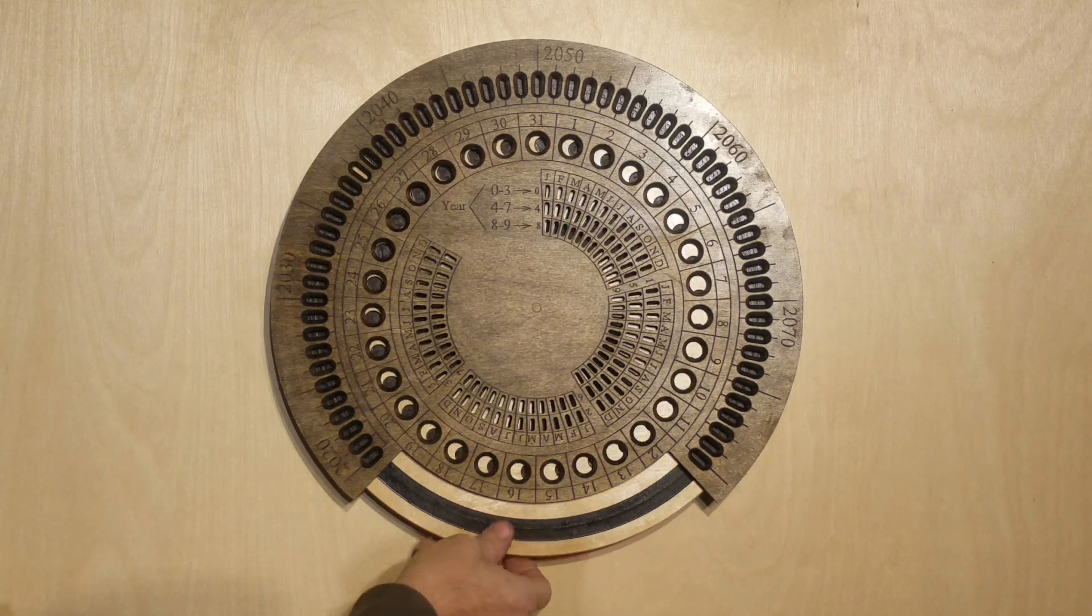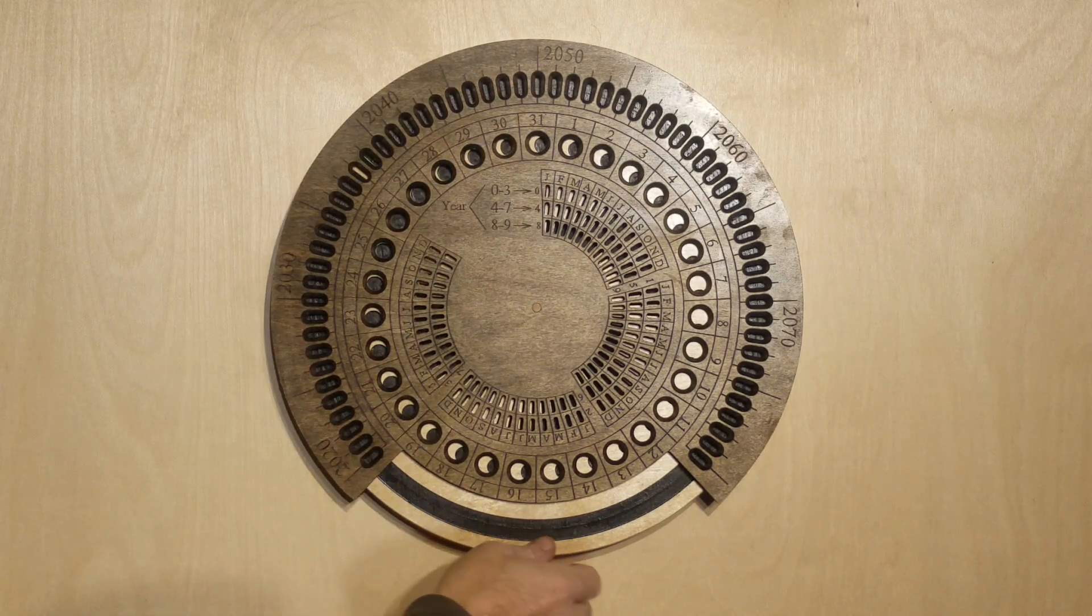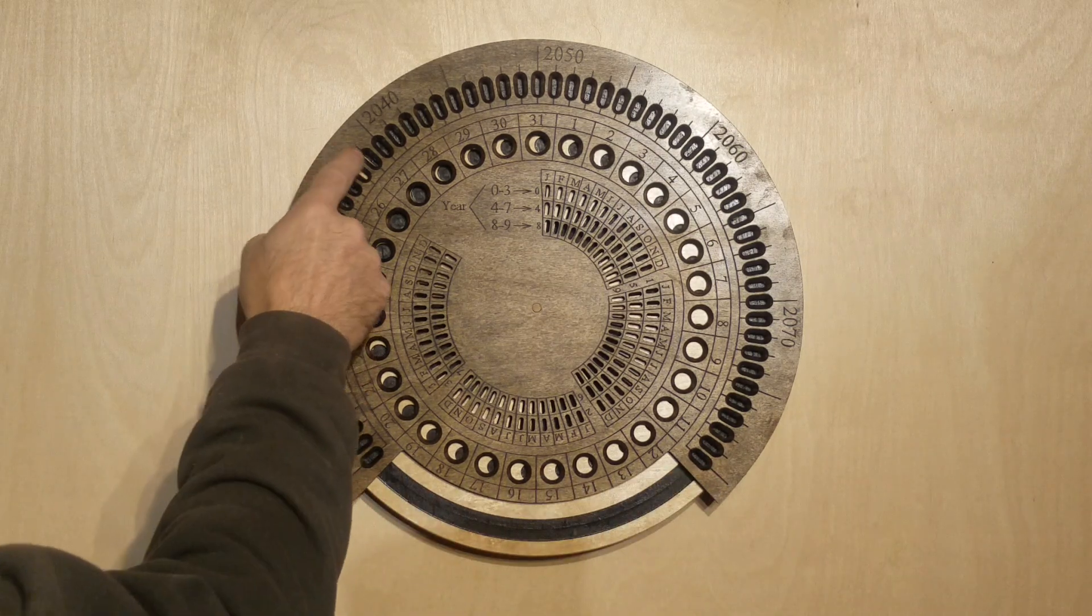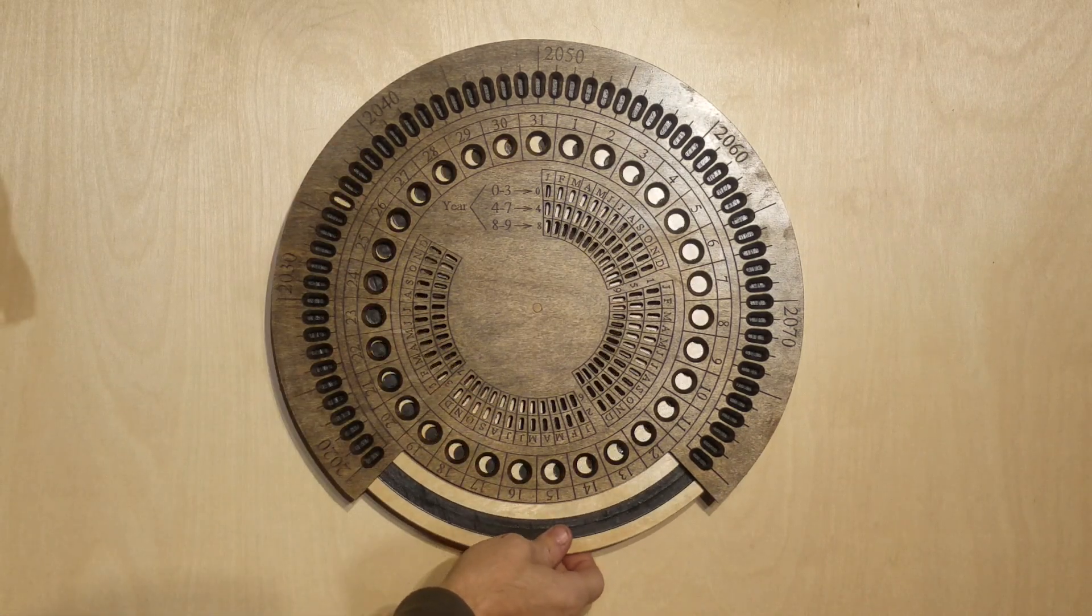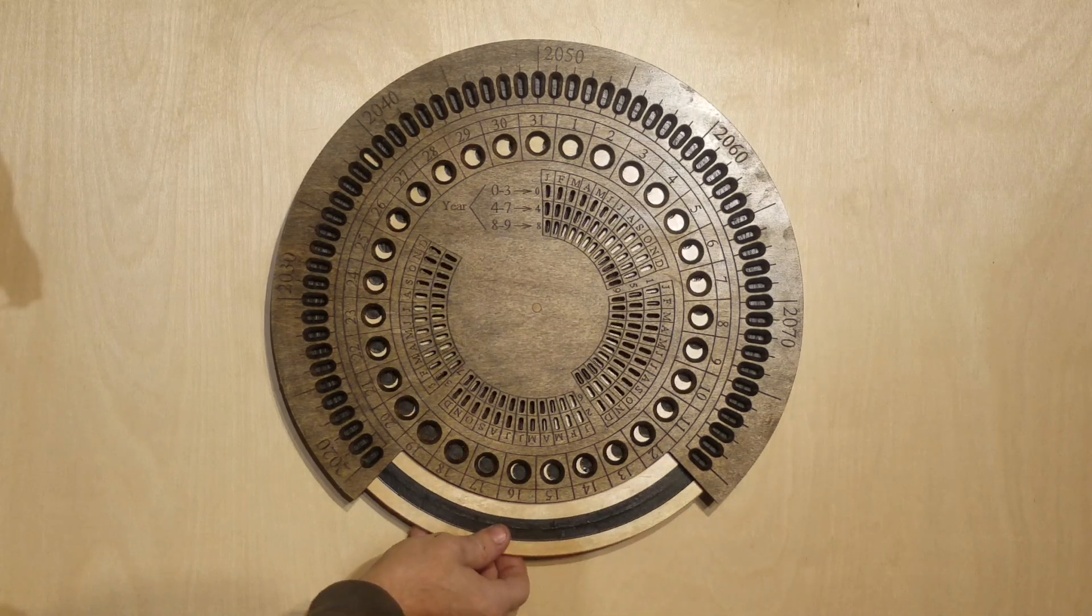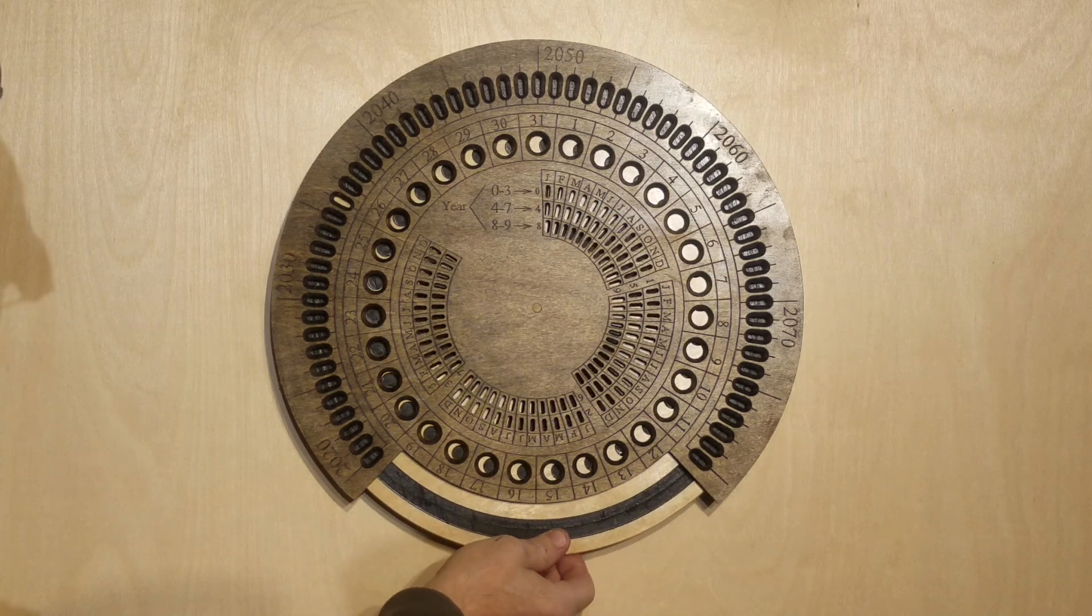So here's how it works. You pick your year on this outer dial here. We've got 2020 through 2080 over here, and you pick it with this little window here, and I love the motion of that, just this sort of digital motion from the analog movement. But let's say you want to go to the year 2036...